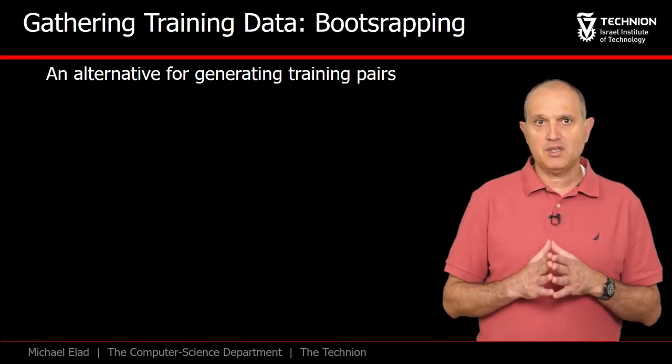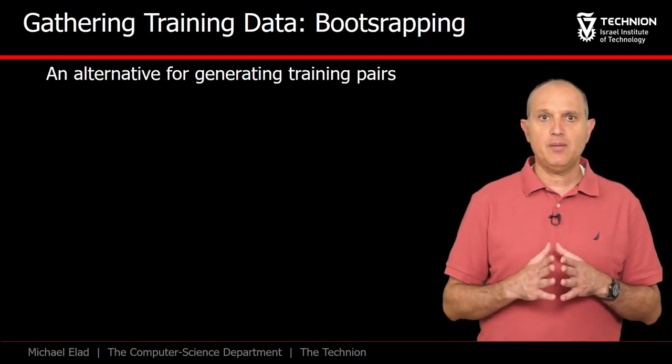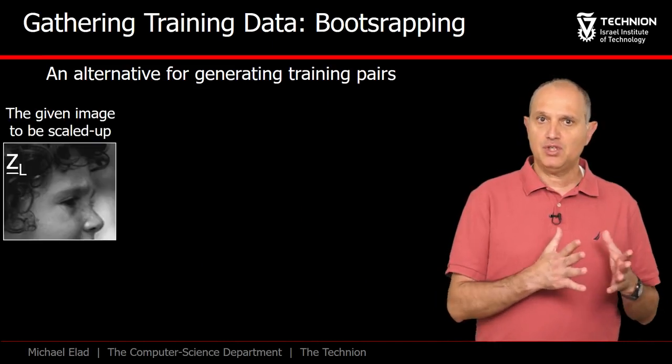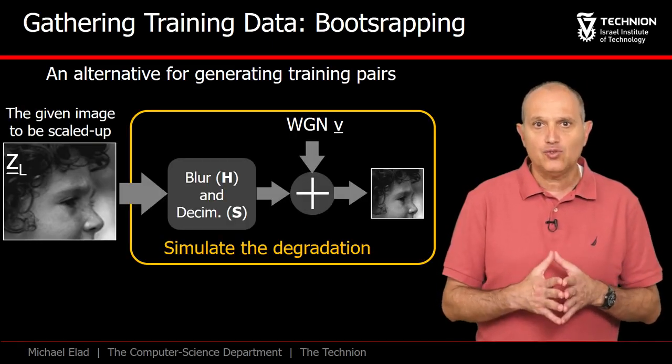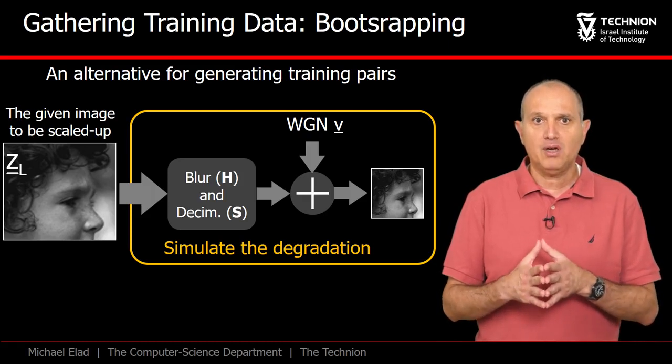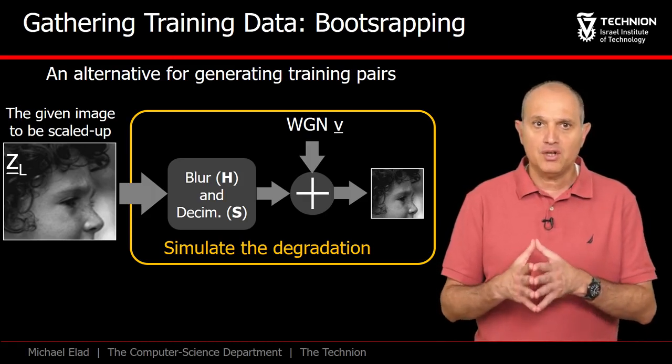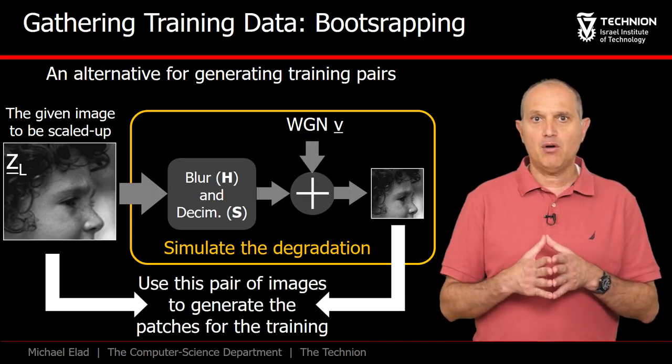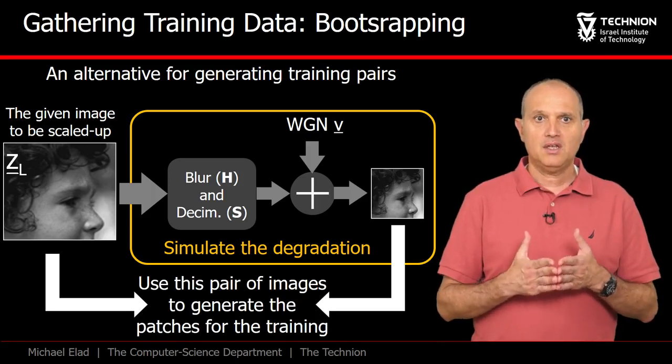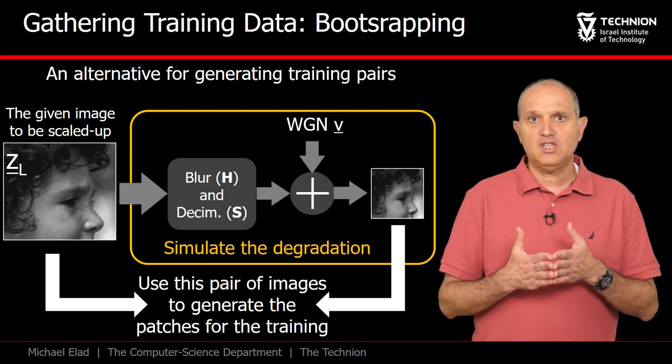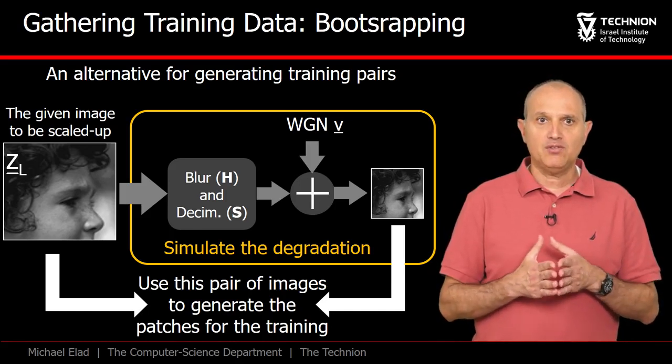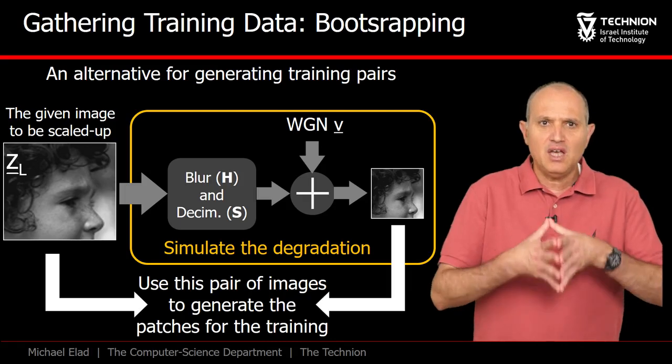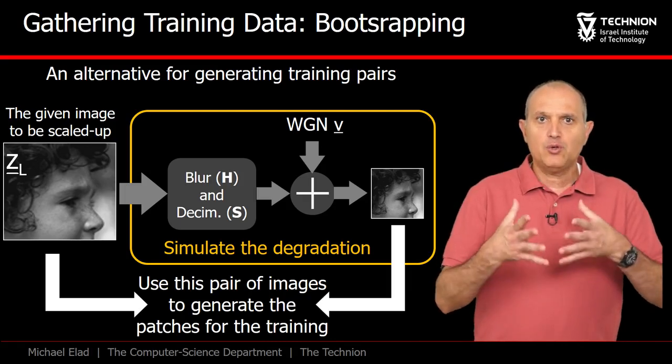Another option, that in some cases makes sense, is to bootstrap the image we are given. We have the image ZL that should be magnified. We use this image itself to create a high and low resolution pair by simulating the degradation on it. This gives us a pair of images to train on. This approach is sensible in cases when the image content is believed to be scale invariant, thus enabling us to create a pair of dictionaries that are specifically tailored to the image we are supposed to improve.